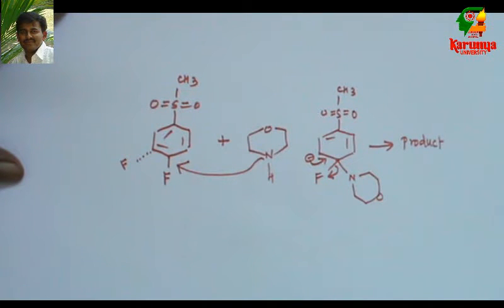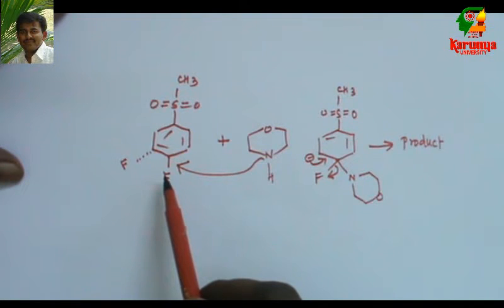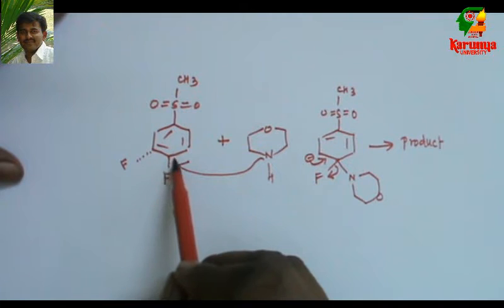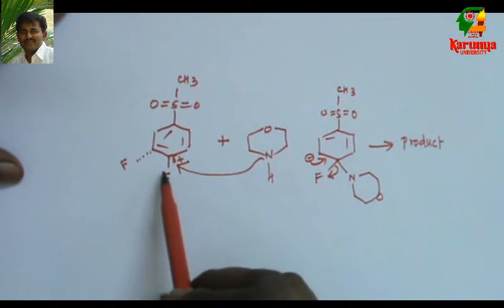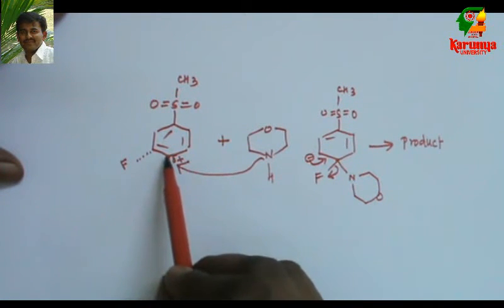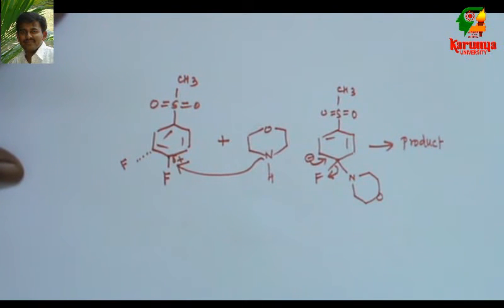One more thing we need to notice is, in aliphatic nucleophilic substitution, fluorine is the poor leaving group. Iodine is the best leaving group in halogens. But in the case of aromatic nucleophilic substitution, fluorine is the better leaving group than chlorine, bromine and iodine. The fluorine atom has more electronegativity compared to chlorine, bromine and iodine. Because of that, the positive charge here increases. Fluorine as well as this sulfone, the electron withdrawing group, both increase the positive charge at this center, and that is attacked by nucleophile.